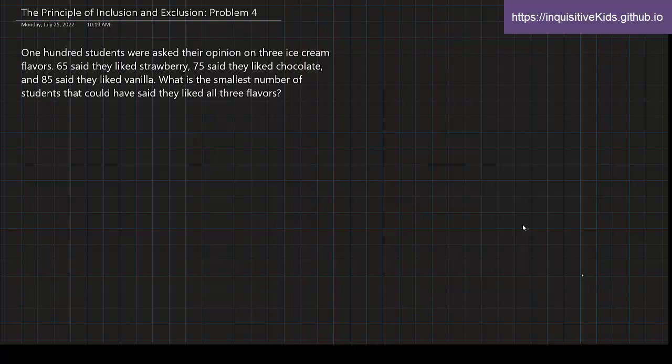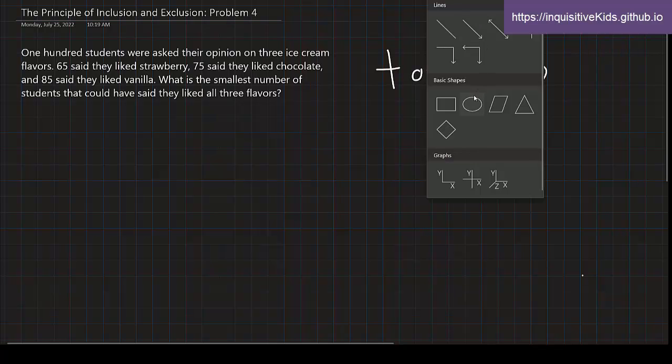So 100 students were asked their opinion of three ice cream flavors. We know that there is a total of 100 students and there are three ice cream flavors, meaning that our Venn diagram should be three separate circles that are overlapping.